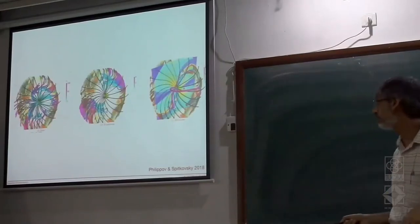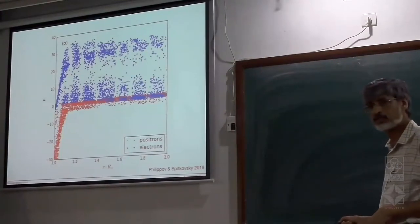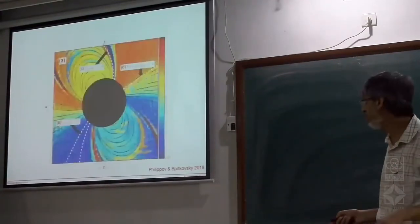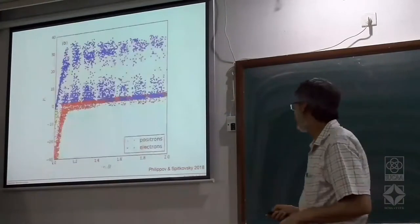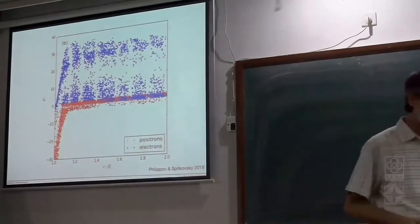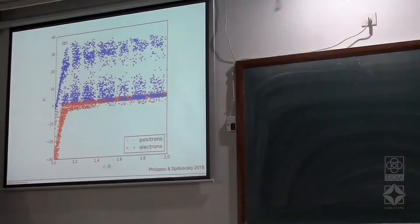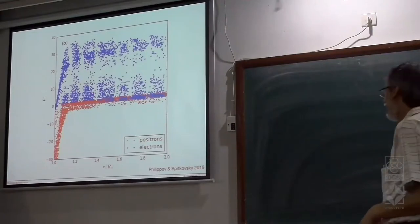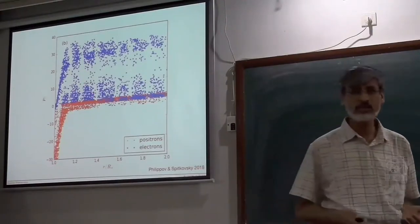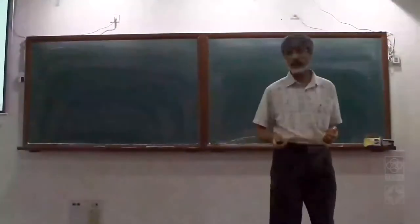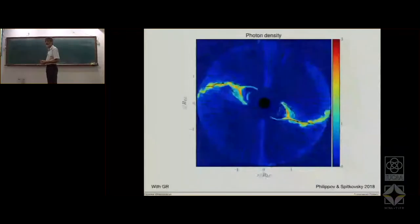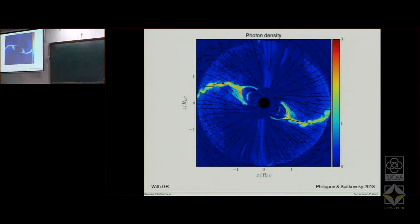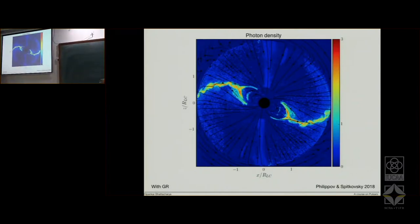Going further out — within two stellar radii of the star — this is the polar cap part of particle generation. As you saw in the overall scheme, this contributes very little to the high-energy photon density. If you go to the photon density you see a certain enhancement in photon density over here for high-energy emission, but the large dominance comes from the outer region near the Y-point.